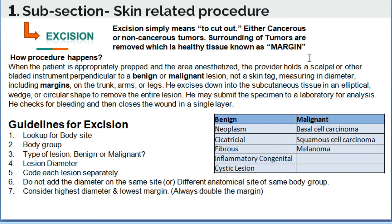This is the removal of benign lesions or malignant lesions. What is malignant and benign? Malignant lesion means cancerous cells which will spread to another part of the body or organs. Benign means the cells which will not spread to other parts of the body or organs.